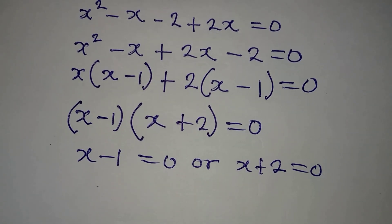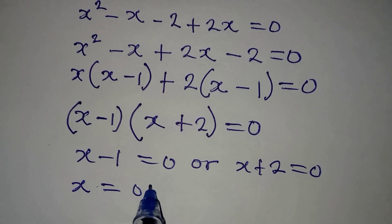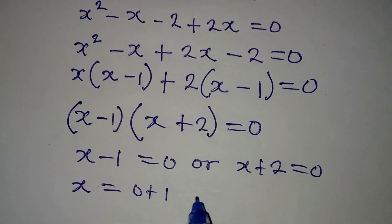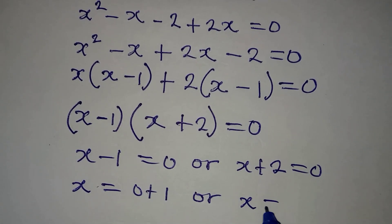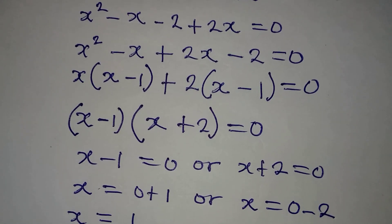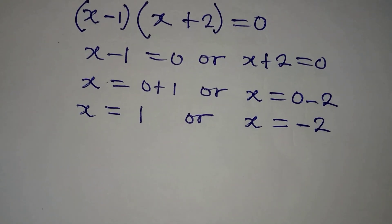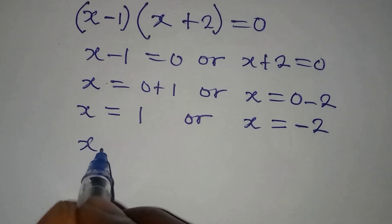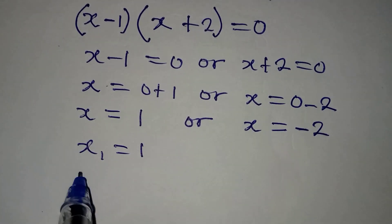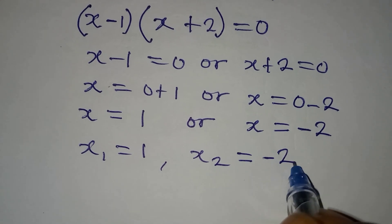We are using the zero product rule now. From here, x minus 1 equals 0, or x plus 2 equals 0. This means x is equal to 0 plus 1, or x is equal to 0 minus 2. So x from here is equal to 1, or x from here is equal to minus 2. We've got the two values of x: x1 equals 1, and x2 equals minus 2.